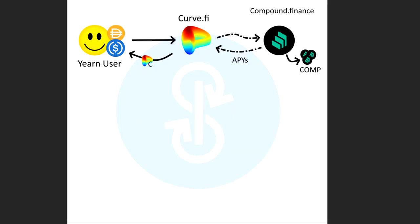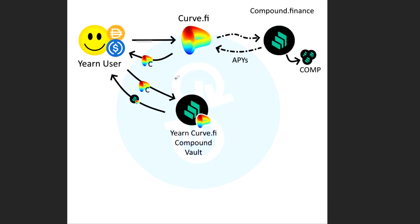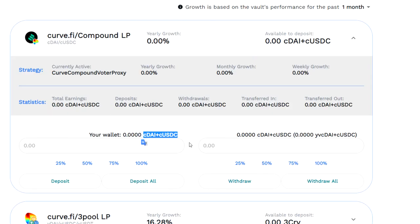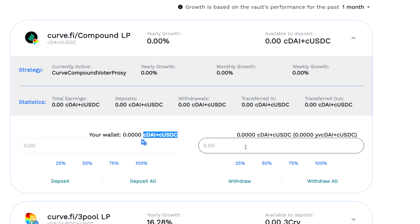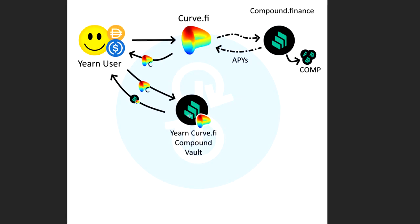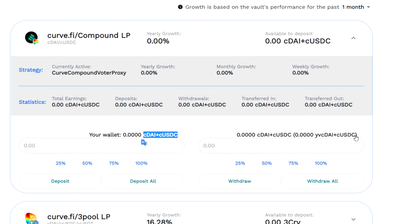So back over here — what happens next? Now you have your C token, your CDAI CUSDC token — this one. And you're going to deposit it into the vault by pressing deposit, or deposit all, or however many you want to deposit. They're going to deposit in here and it's going to give you back this vault key, which is this big long stringy token. I'm just going to call it the Compound Vault key.